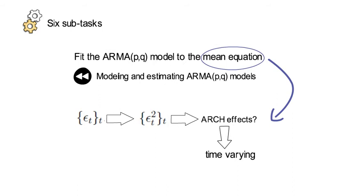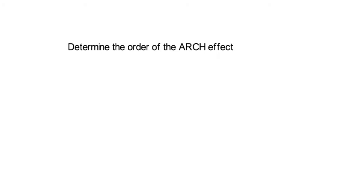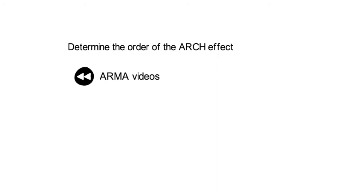So the third task is then we determine the order of the ARCH effect. For that you can apply the PACF on the squared residuals or the AIC or the BIC test. If you want to refresh these tests, you can revisit the corresponding ARMA videos. Although here it's applied to ARCH, the tests and the general procedure are really the same.